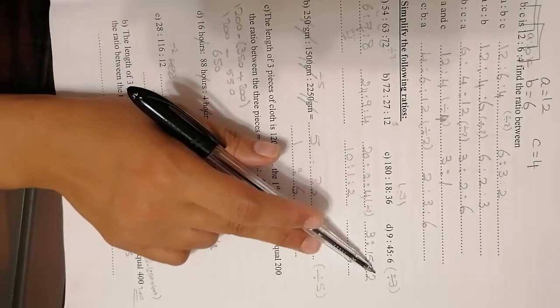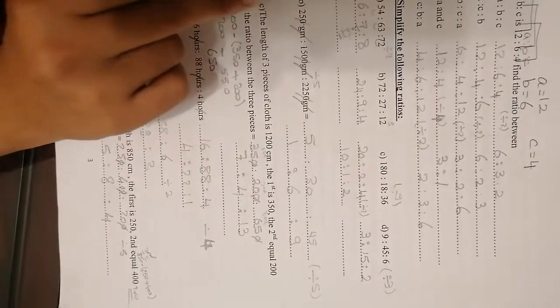And here also, divisible by 3, the three numbers, the answer will be 3 to 15 to 2.